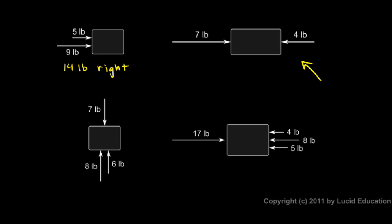In this second case, we have 7 pounds to the right and 4 pounds to the left. You should be able to see that this 4 pounds to the left is going to cancel out 4 of those 7 to the right, leaving us with a net force of 3 pounds to the right.